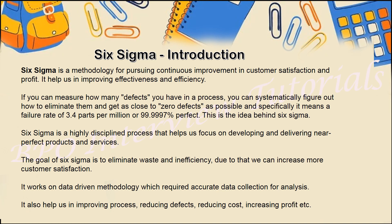Six Sigma tells us that if the failure rate is 3.4 parts per million — which is 99.999% perfect — our process is considered perfect. To remember it simply: Six Sigma provides 99.9997% perfect execution. Six Sigma basically works on a data-driven method where it requires the exact amount and calculation of data so that it can analyze things very easily.